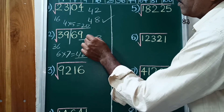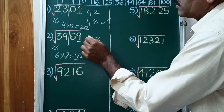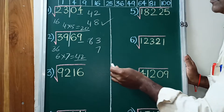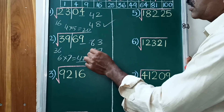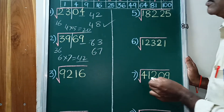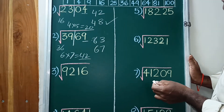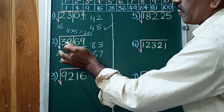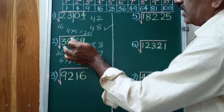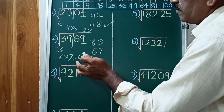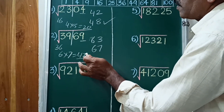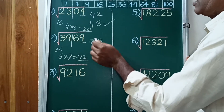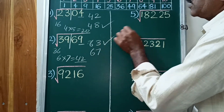So the answer uses 6 — giving digits 63 and 67. Since 39 is less than 42, the square root of 3969 equals 63.